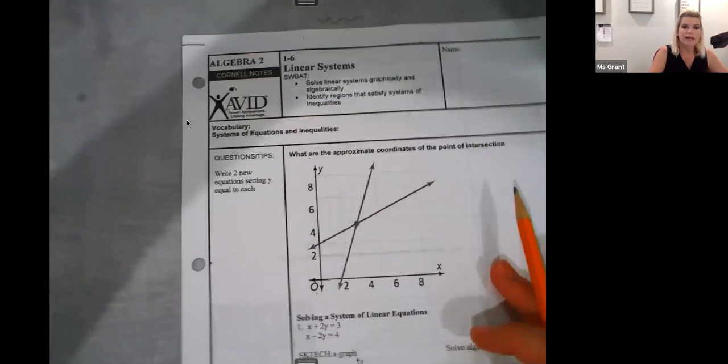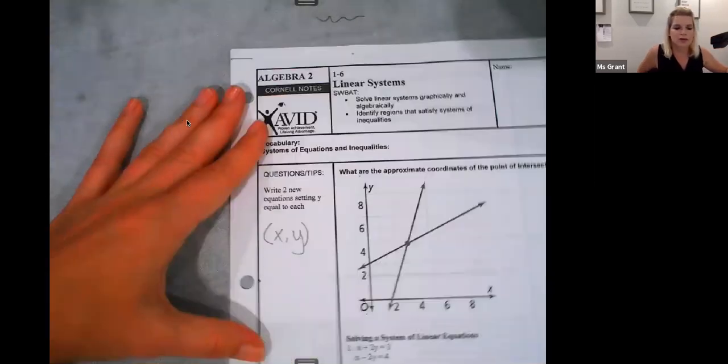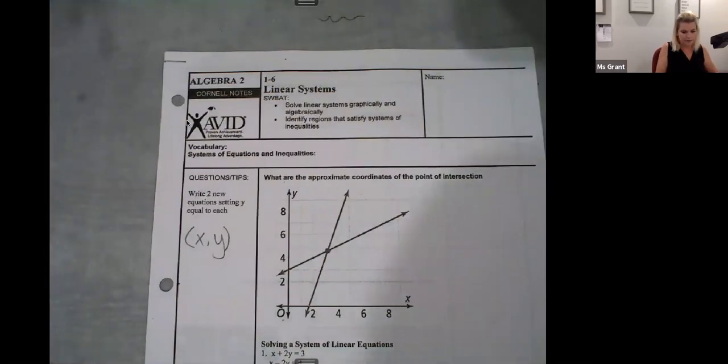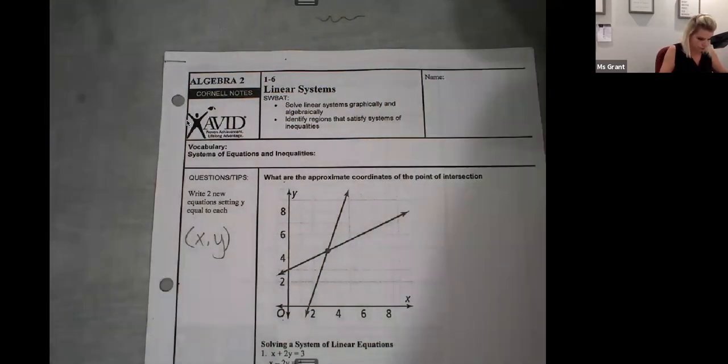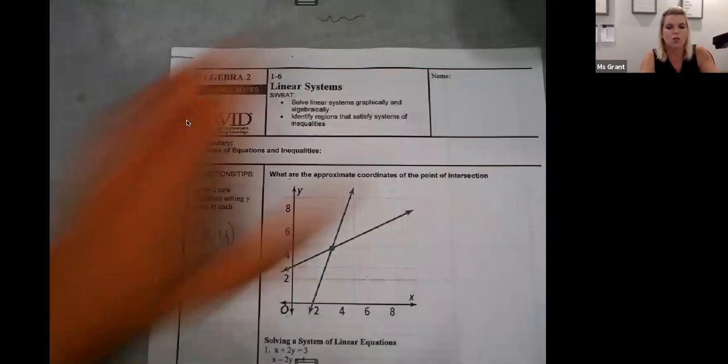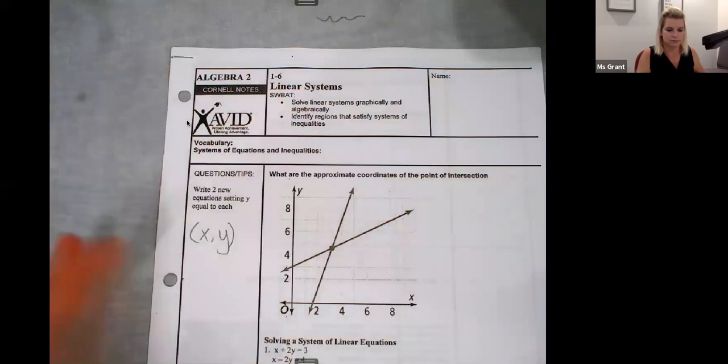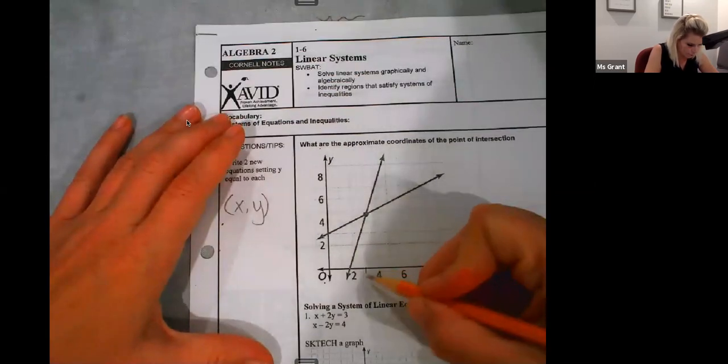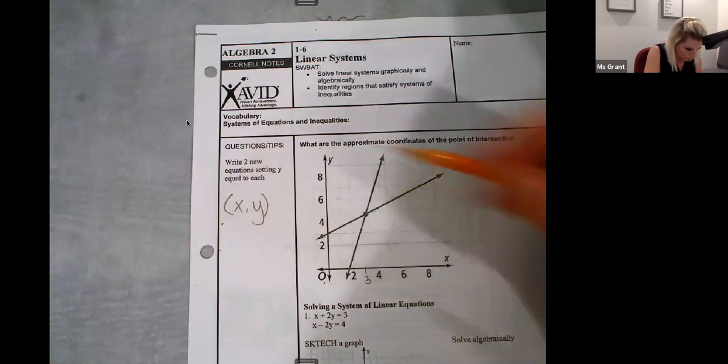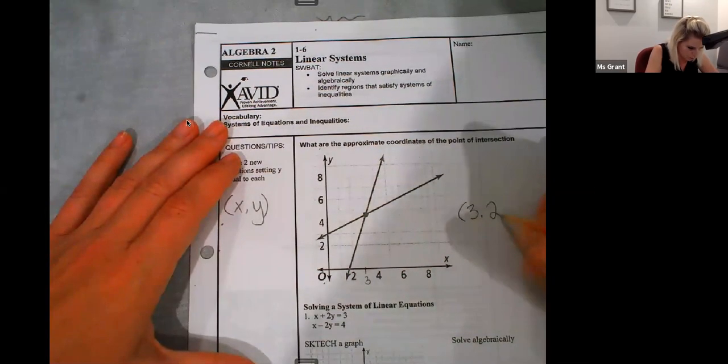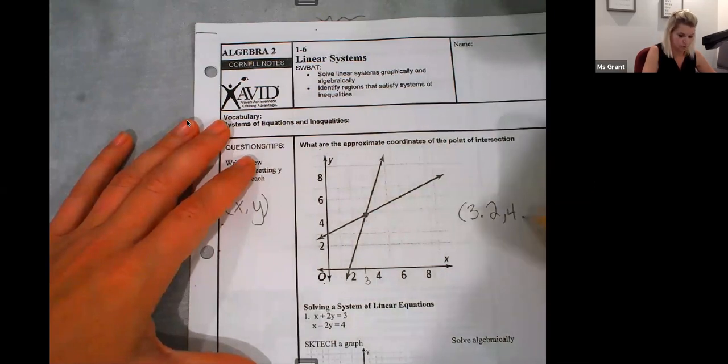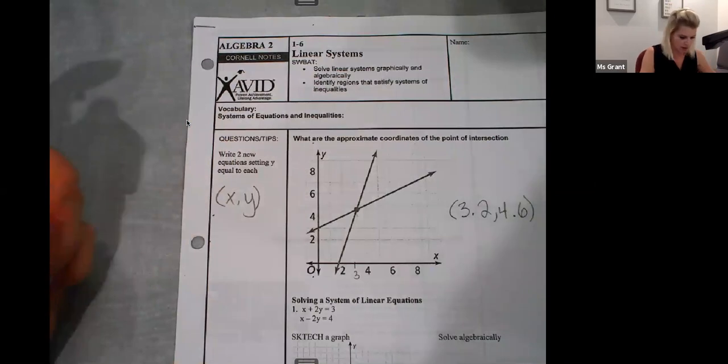Systems of equations, guys. We need to have an ordered pair solution, right? X comma Y, and that ordered pair is going to work for both equations that we have. On this first one, I've got what are the approximate coordinates of the point of intersection? So, where does the ordered pair, what are the two functions meet? We could say, like, if this is 3.2, up to 4.6. That's the solution, the point of intersection.